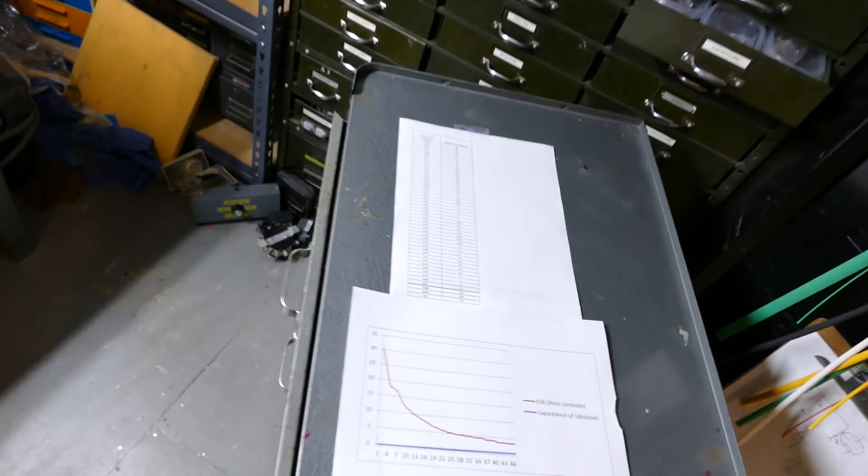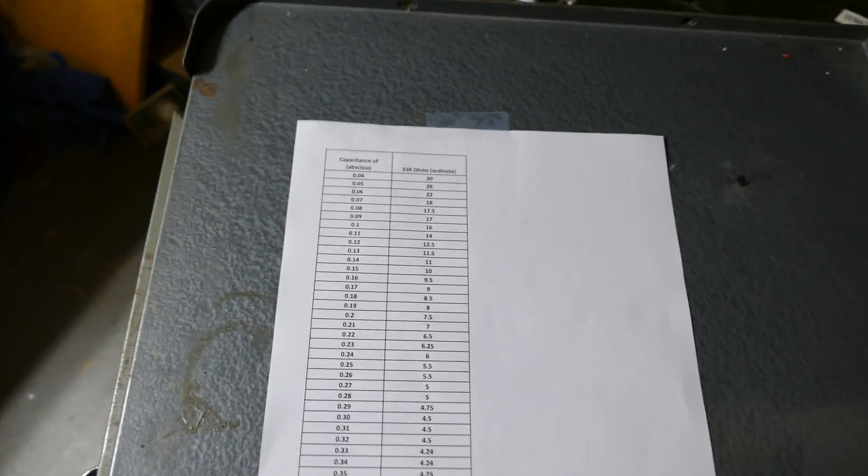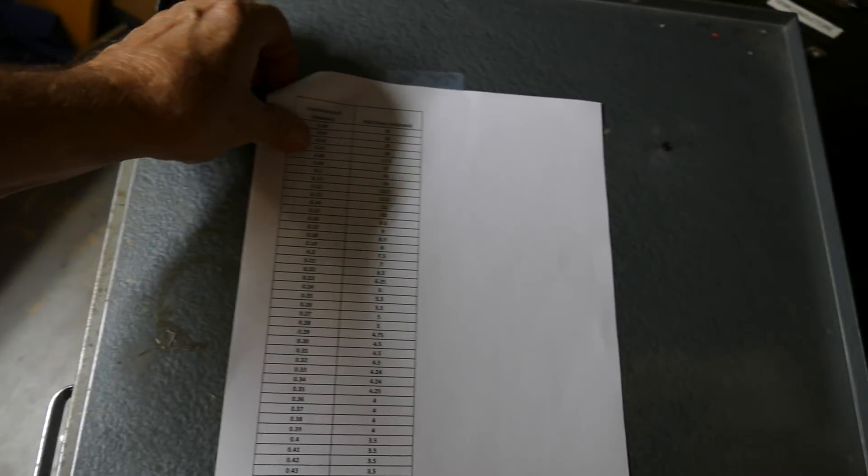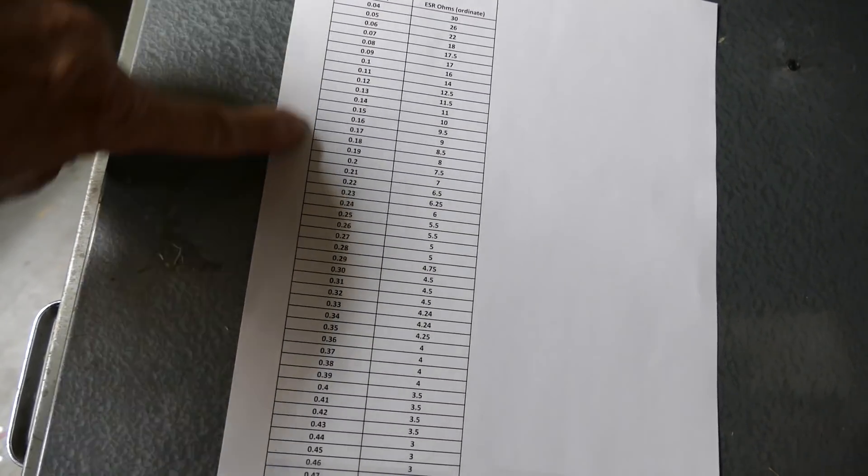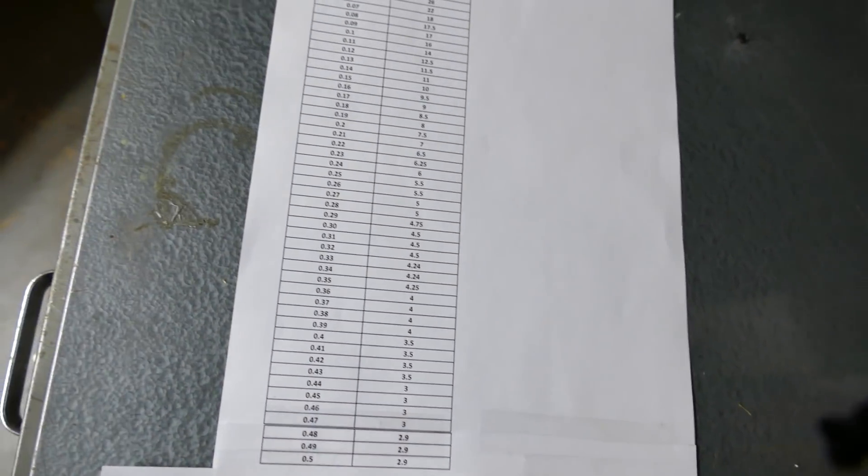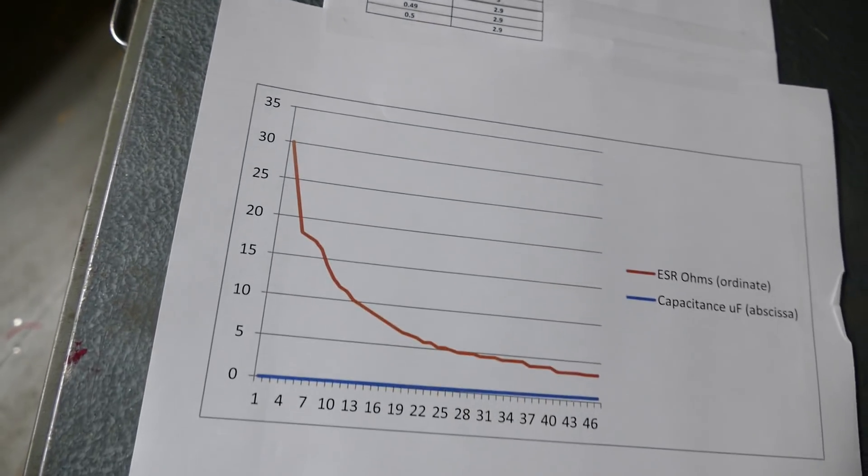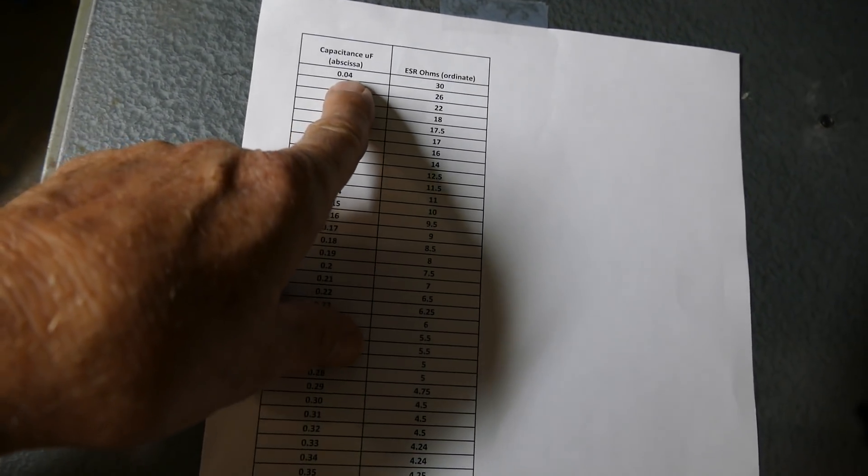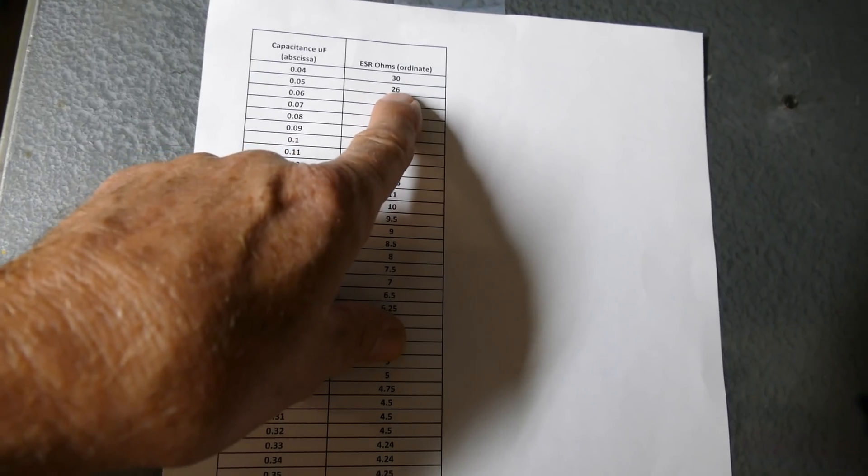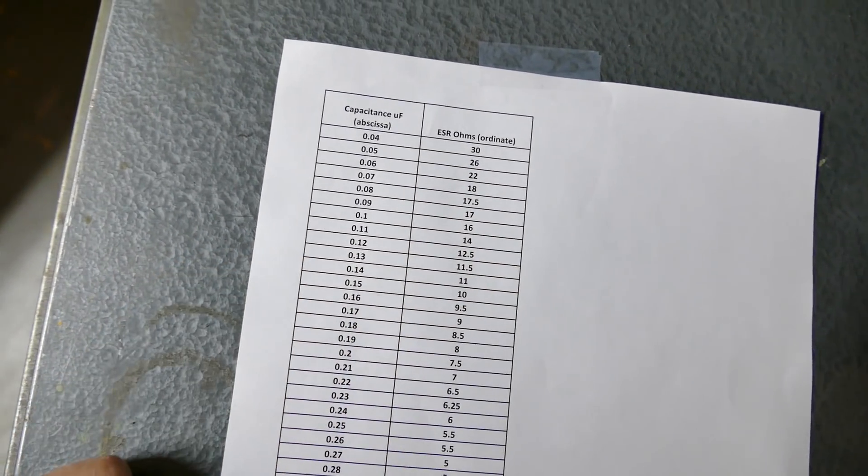I think all you guys that watch my videos know Uncle Doug. He and I have known each other for some time. A while back he empirically measured all these capacitors, measured the ESR on the same meter I'm using. He gave me this data and I put it into an Excel spreadsheet and plotted it. A 0.047 should be about right there between 0.04 and 0.05, somewhere between 30 and 26 ohms, as you can see.